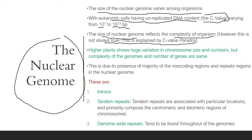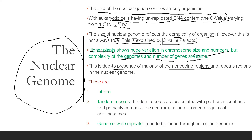The size of the nuclear genome reflects the complexity of organisms; however, this is not always true, and this is explained by the C value paradox. The higher the complexity of the organism, the bigger the nuclear genome. Higher plants show huge variation in chromosomal size and numbers, but the complexity of the genome and the number of genes are the same. This is due to the presence of non-coding regions and repeat regions in the nuclear genome.